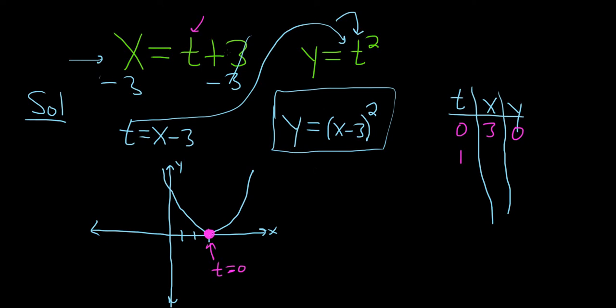And when t is 1, we get 1 plus 3, so that's 4. And 1 squared is 1. So at t equals 1, x is here and y is here. So this corresponds to t equals 1. It must go in this direction. And that is the orientation.